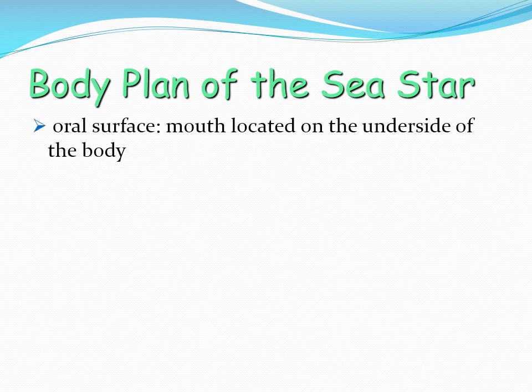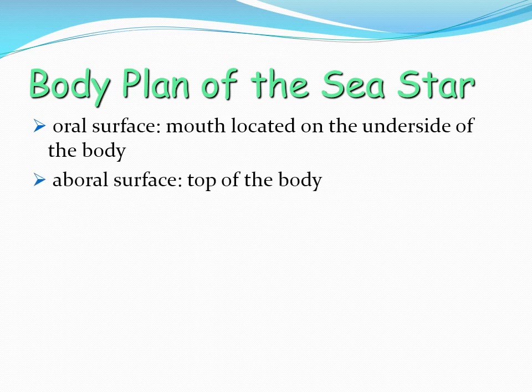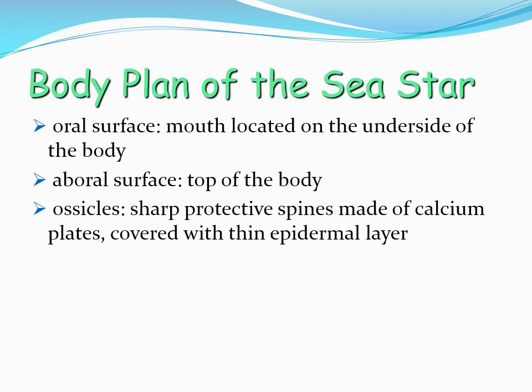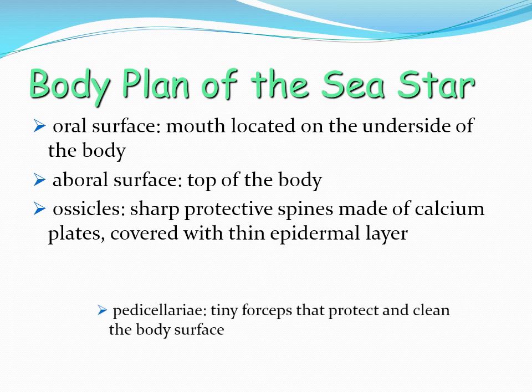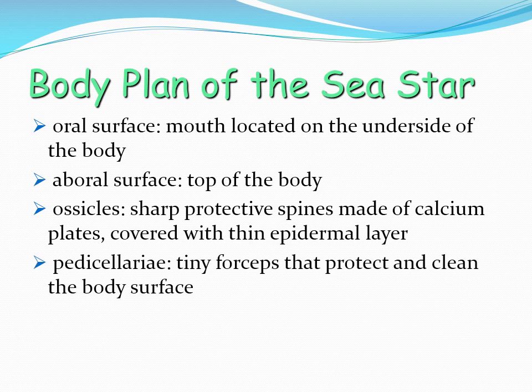The body plan of the sea star: the oral surface has the mouth on the underside of the body, while the aboral surface is the top. Ossicles are sharp protective spines made of calcium plates covered with a thin epidermal layer. Pedicellariae are tiny forceps-like structures that protect and clean the body surface.